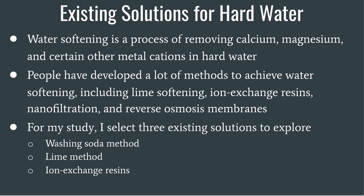Water softening is a process of removing calcium, magnesium, and certain other metal cations in hard water. People have developed a lot of methods to achieve water softening, including lime softening, ion exchange resins, nanofiltration, and reverse osmosis membranes.